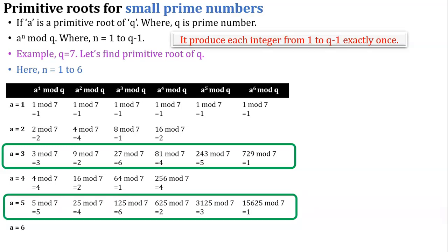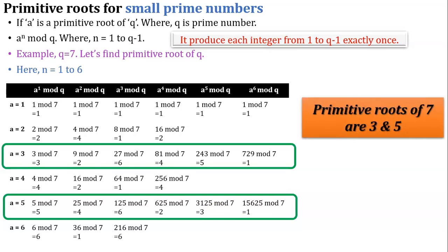For a equals 6: first equation gives 6, second gives 1, and third gives 6 again. Our condition is not satisfied because a raised to 1 mod q and a raised to 3 mod q are both 6. No need to find a raised to 4, 5, or 6 mod q. Based on this calculation, the primitive roots of 7 are 3 and 5.